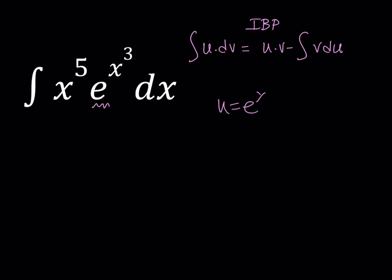U equals e to the x cubed. And from here, I'm getting du. You're going to use the chain rule. So, 3x squared times e to the power x cubed. That's my du. And then, dv is x to the fifth dx. By integrating dv, you get v, which is x to the sixth over six.